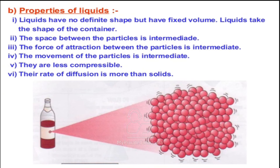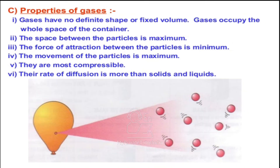Now we will see the different properties of gases. Gases do not have a definite shape, neither do they have a fixed volume. They occupy the whole space of the container. Gas ka na toh fixed shape hota hai, nahi fixed volume hota hai. Jaise container mein usko daltay hain, woh poore container ko occupy kar leta hai. This is because the space between the particles in gaseous state is maximum.